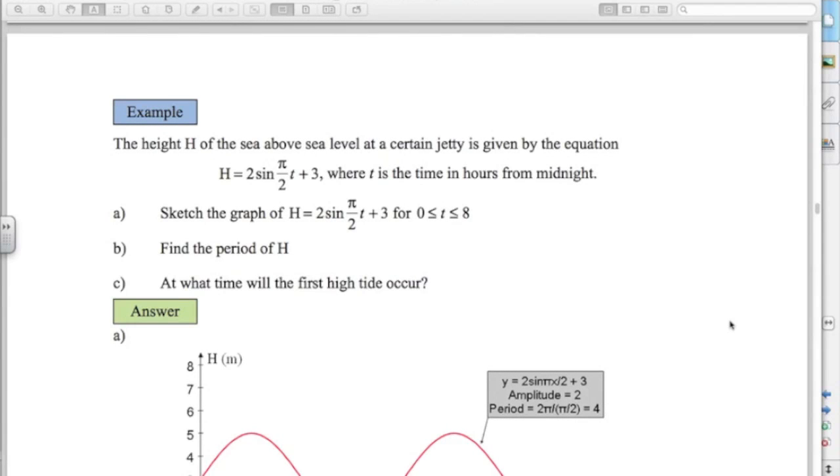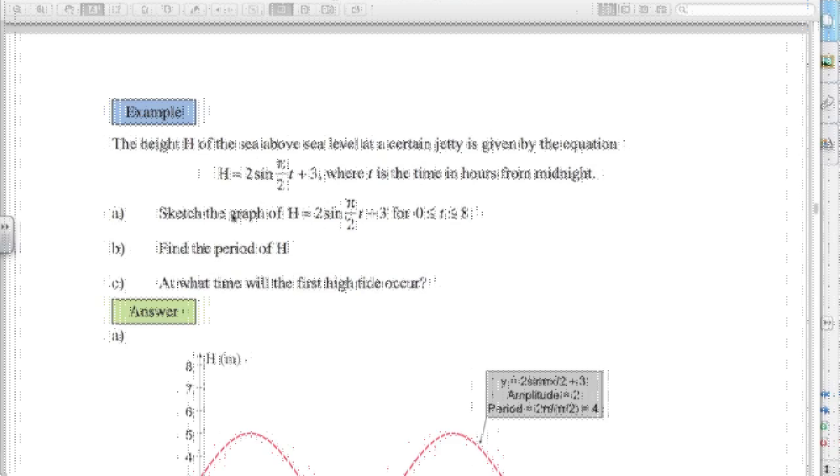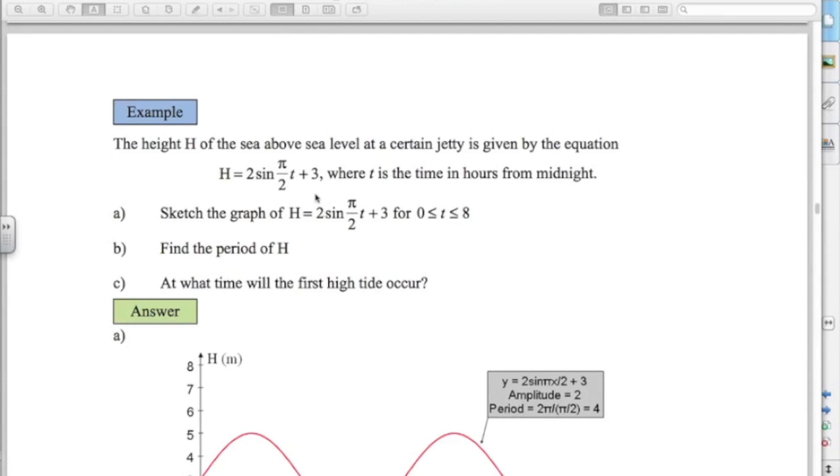This last example is an example of a trig graph in context. We've got the height of the sea above sea level at a certain jetty given by this equation. And you can use trig equations to model these things very accurately. Here, t is time in hours from midnight. So let's have a look at the graph here. The amplitude is 2. So it'll be going between 2 and minus 2. We add on 3. So now it's not going between 2 and minus 2. It's going between 5 and 1. Okay, I hope that made sense. So the amplitude of 2 and then we add 3 onto all the values. So we've got a sine graph. Now it's going between 5 and 1.